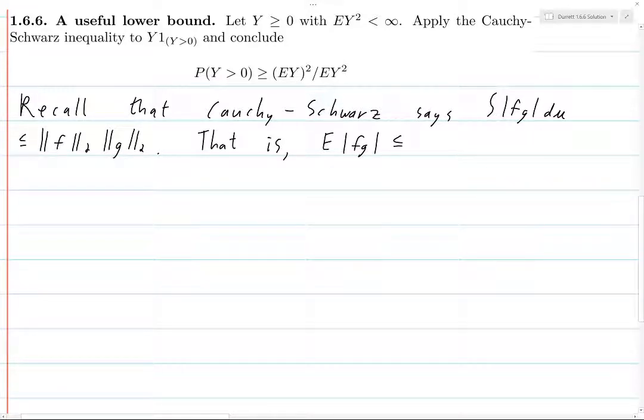The 2-norm of f is the integral of the norm of f squared and then the square root of that whole thing. So integral or expected value of norm of f squared, and we take the square root times the same thing for g.